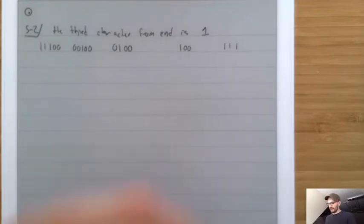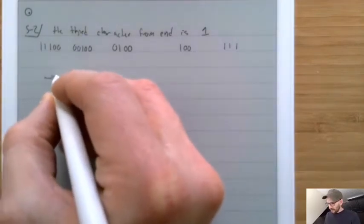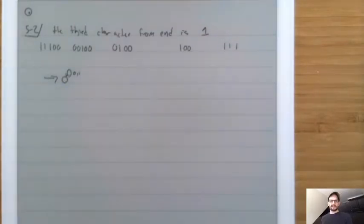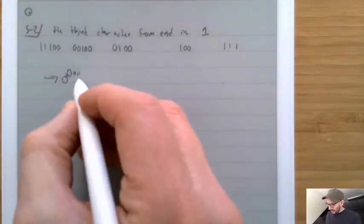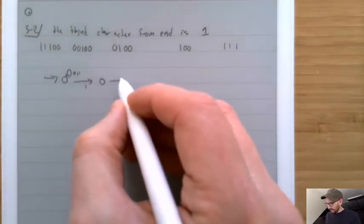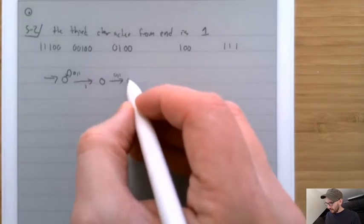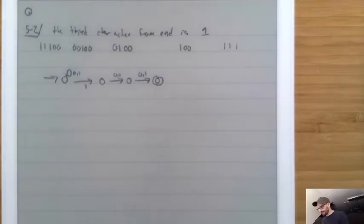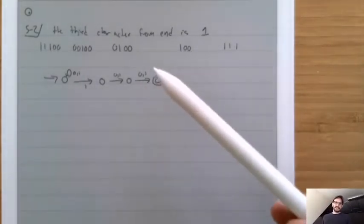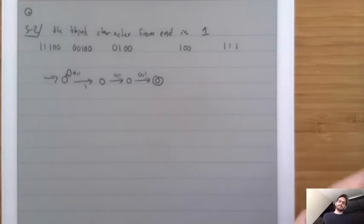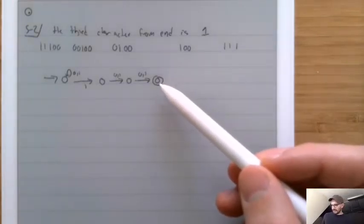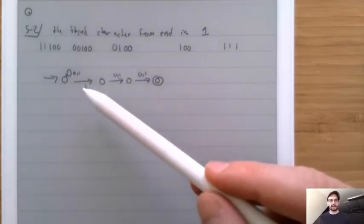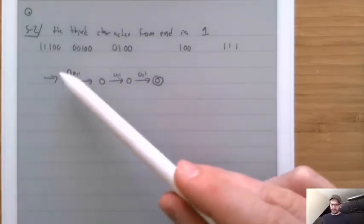Here's one way to write it down as an NFA. We'll have a start state, and if we see a 0 or a 1 we stay in the start state. If we see a 1, we go to the next state; if we see a 0 or a 1, we go to the next; and if we see a 0 or a 1, we go to the accepting state. Notice how this encodes the idea of the third character from the end being 1: if we got to the end, we saw three characters where the third was definitely a 1, and before that we saw anything.